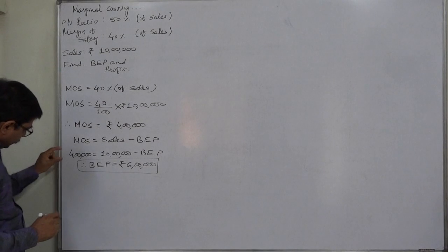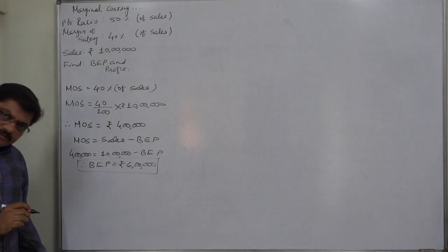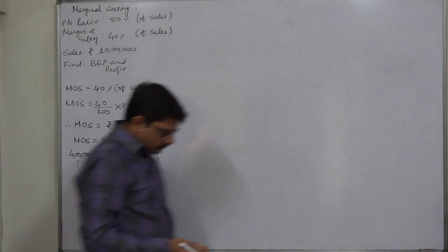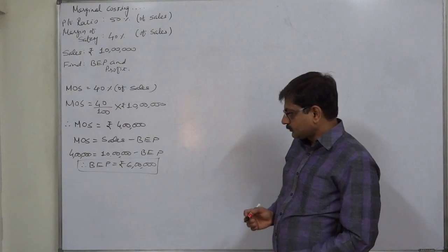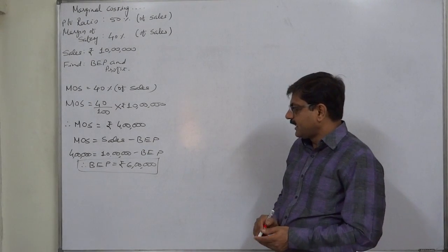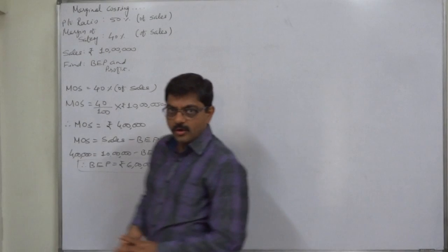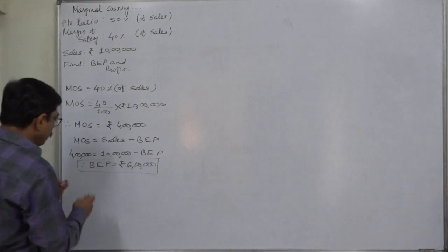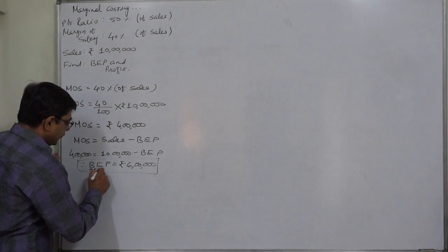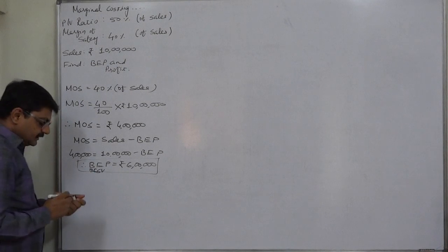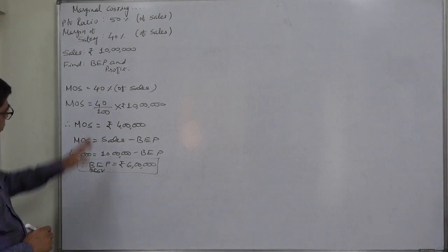6 lakh or 600,000. Since we have substituted margin of safety and sales as values, BEP also comes to its value. So the first final answer is: break-even point or break-even sales value more precisely, is 600,000 or rupees 6 lakh.